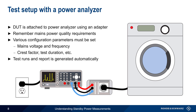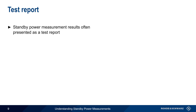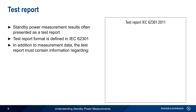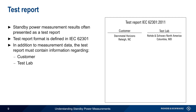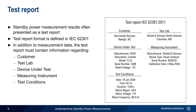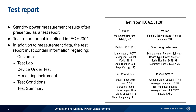Once these have been configured, the test typically will run automatically, and at the end of the test, both a pass-fail result and relevant statistics are displayed. In many cases, a test report can also be automatically generated. The test report is a very common way of presenting the results of a standby power measurement, and the standard format of this test is defined in IEC 62301. In addition to the measurement data itself, a test report must also contain information regarding the customer, the test lab that conducted the measurement, the device under test, the instrument used to make the measurement, the test conditions, and a test summary which also includes the overall pass-fail result.